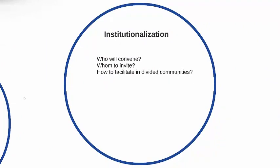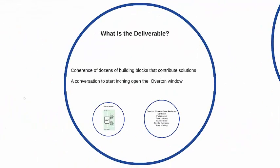We need to institutionalize this shared understanding. We need to answer: who can convene these multiple stakeholders? How can we strategically ensure that domination of the agenda by the powerful will not occur? And how can we facilitate a conversation when a community is divided? That institutionalization will be different in different contexts, but every time we build it, we are relying on the public health profession. The deliverable is the coherence of dozens of building blocks — not just six — from across society that contribute solutions.